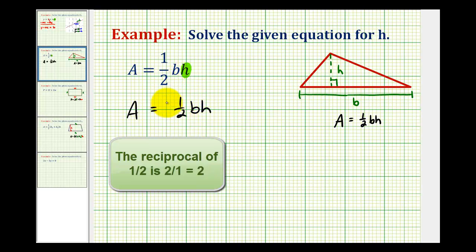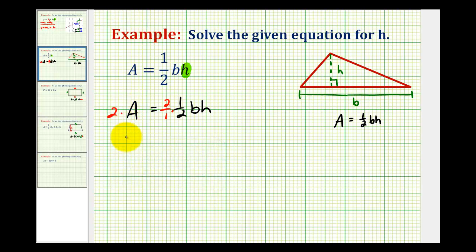On the right side, we'll multiply by 2 over 1. On the left side, we'll write it as 2, since this is in fraction form and this isn't. Now we have 2 times A equals b times h. To isolate h, since b is attached by multiplication, we'll divide both sides by b. On the left side, we have 2A divided by b equals h. Now this equation is solved for h.